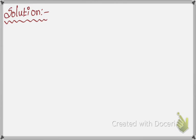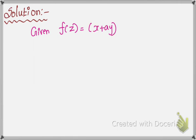First, you have to write the given term. The given term is f(z) = x + ay + i(bx + cy). They have already given that it is analytic. Now we are going to check the condition for analytic. What is the condition for analytic?